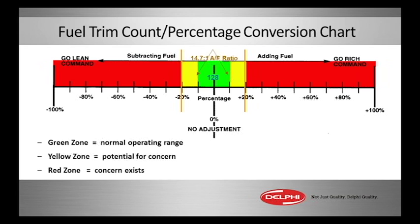You see the 128 number by the way, a little trivia, that was the old block learn integrator numbers from General Motors. 128 was stoic, no trim adjustment and a number below 128, 100 or above 128, 140, that was adding or reducing fuel.